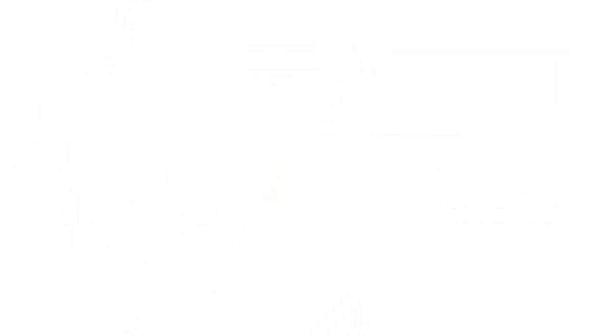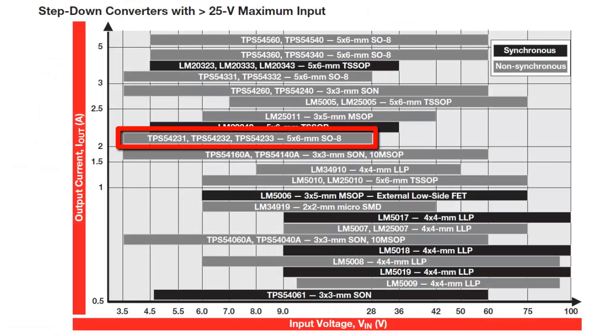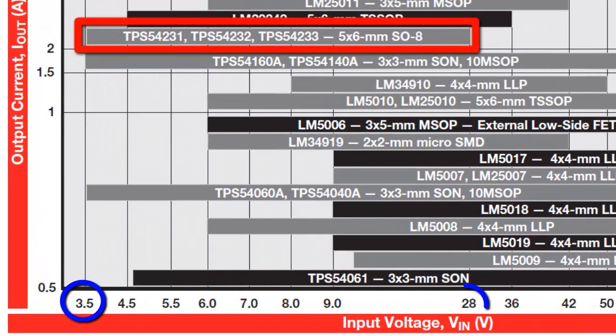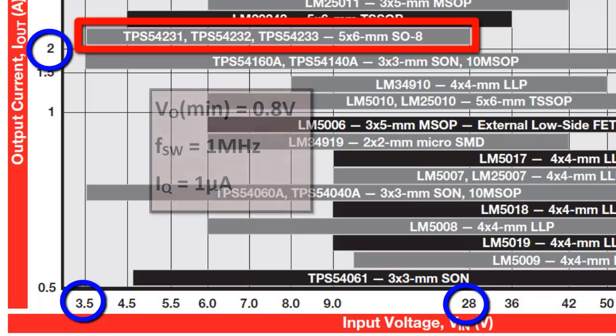The TPS54232 has an input voltage range from 3.5 to 28 volts and delivers a continuous output current up to 2 amps. Its output voltage can be adjusted down to 2.8 volts.